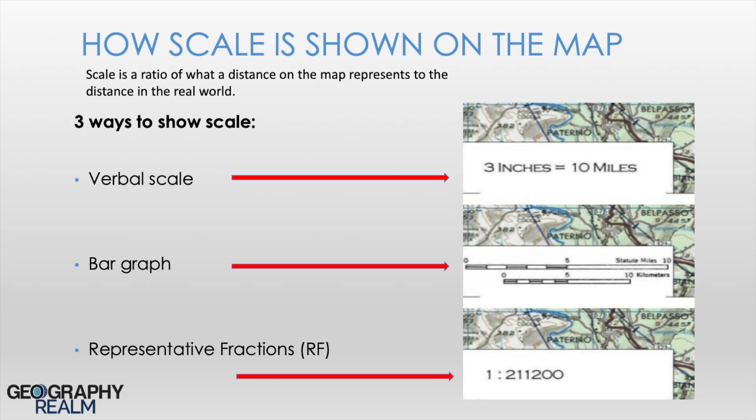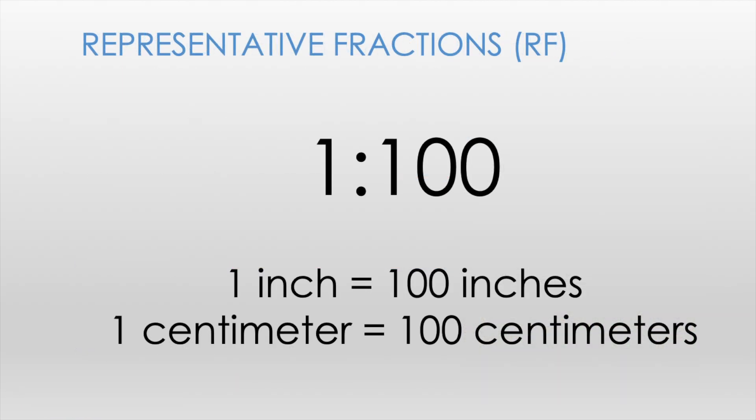Representative fractions are similar to verbal scales but are independent of any specific type of measurement unit. For example, you may see a 1 to 100 ratio. This means that the unit on each side of the colon is the same. In this example of 1 to 100, it could mean 1 inch equals 100 inches on the ground. The same holds true for 1 centimeter on the map being equal to 100 centimeters on the ground. The type of unit doesn't matter.